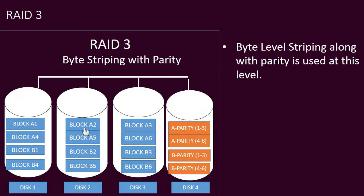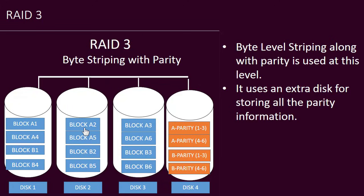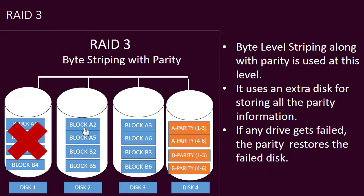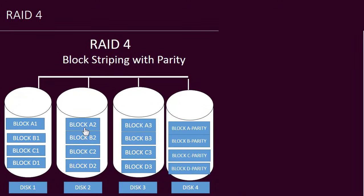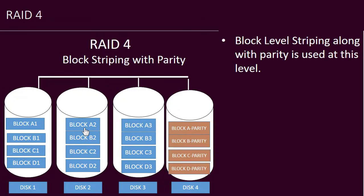RAID Level 3 uses byte-level striping with parity. One extra disk is utilized for storing all the parity information. If one drive fails, the parity bit helps to restore the failed disk. However, if the parity drive itself fails, data recovery is not possible.